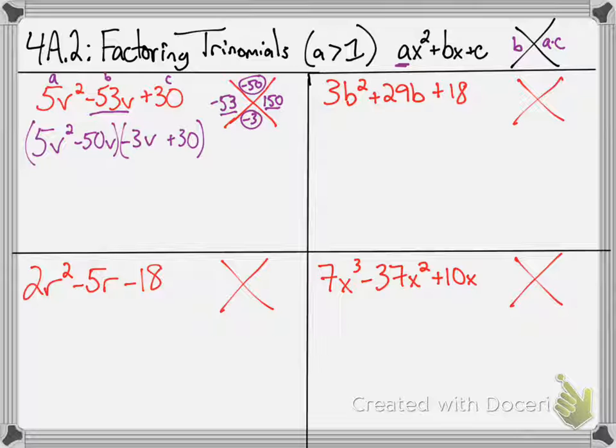From here, we are going to find the GCF of each group. If we do this correctly, what you'll see are some matching pieces. So, let's go ahead and look at the first group here, 5v² - 50v. The GCF is 5v. Leftover would be v - 10. If we take the right GCF out of the second group, we'll get a matching piece of v - 10. So, GCF of negative 3v and positive 30, I can take out a negative 3. That would leave me with v - 10. Matching pieces means I have factored by grouping correctly.